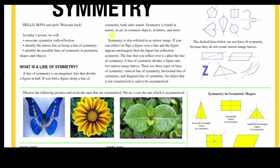Symmetry is found in nature, in art, in common objects, in letters and more. Symmetry is also referred to as mirror image. If you can reflect or flip a figure over a line and the figure appears unchanged, then the figure has reflection. If you can flip the figure over a line and the figure appears to be unchanged, then we say that it has reflection or reflection symmetry. The line that you reflect over is called the line of symmetry, which divides a figure into two mirror image halves.